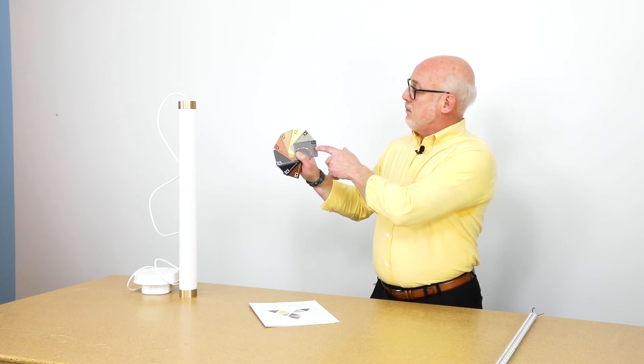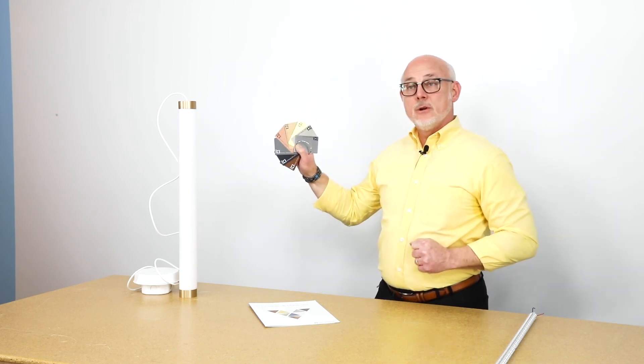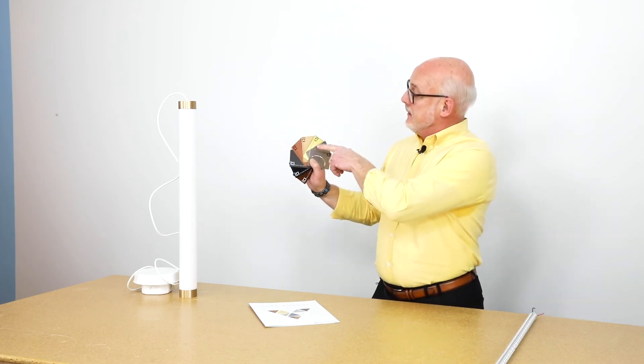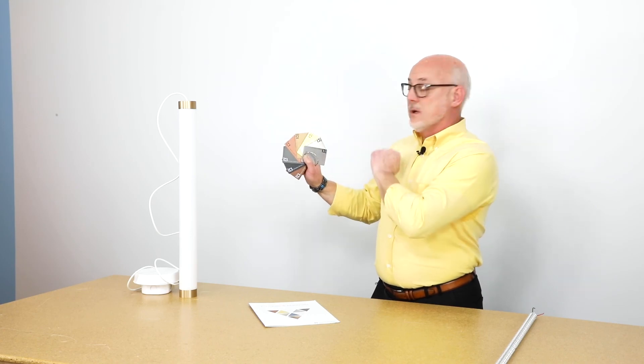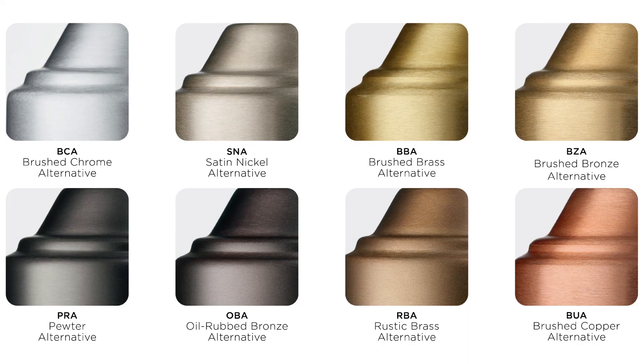So the originals were a brushed chrome and a satin nickel alternative, and a few years ago we added in a brushed brass, brushed bronze, brushed copper, and a pewter, oil rubbed bronze, and a rustic brass alternative.